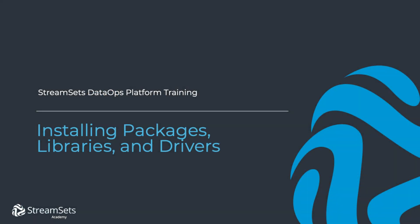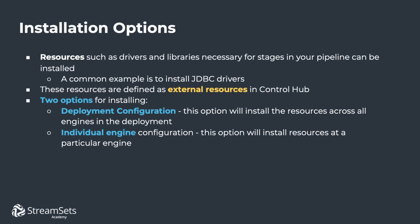In this lesson, we're going to learn how to install external resources such as packages, libraries, and drivers. External resources may be necessary to run your pipelines. For example, when connecting to a database such as Oracle, the compatible JDBC driver needs to be made available to the execution engine running the pipeline.